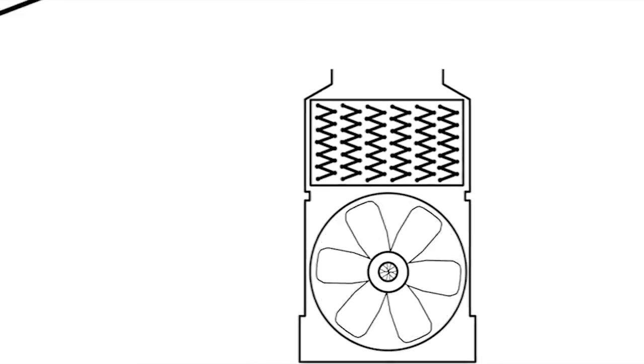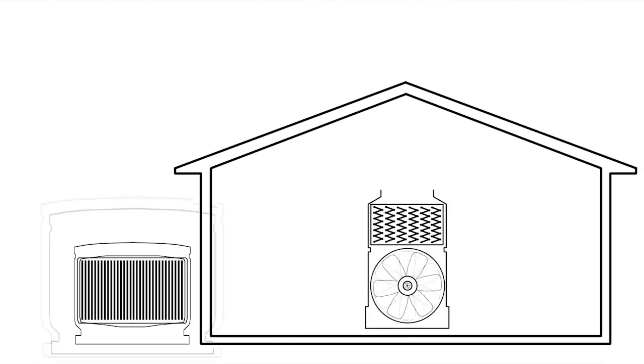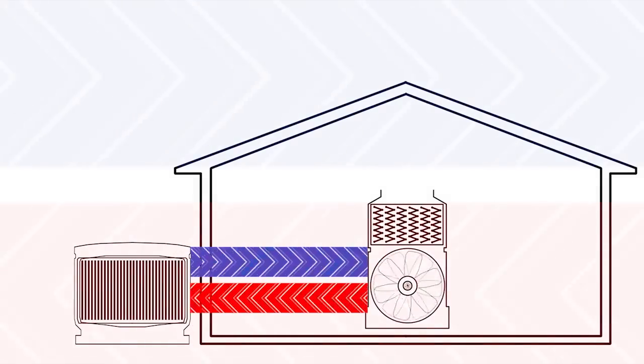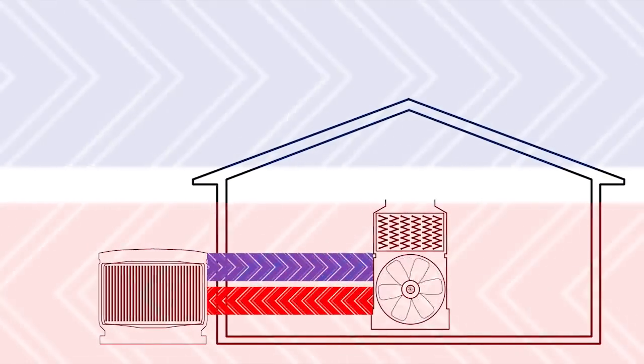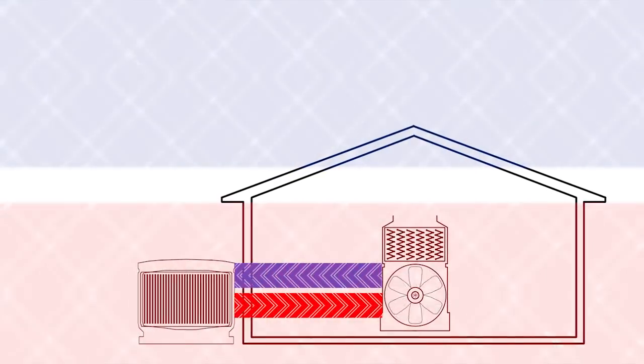With a heat pump, you'll seldom ever use those heat strips. Your outdoor unit is now going to serve for both purposes, by heating and cooling the home. It's just a simple change in the flow of refrigerant that makes that happen.